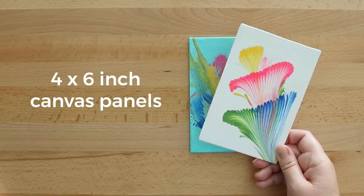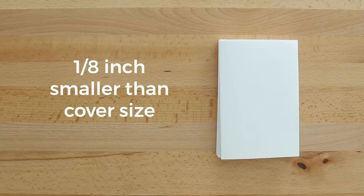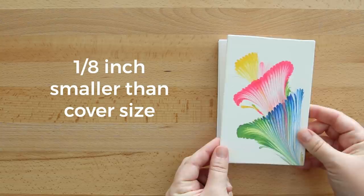For the pages, I made eight signatures of paper. Signatures are just four folded sheets stacked together. I trimmed all signatures to be an eighth of an inch smaller than the canvas panel. The page size is up to your preference, but I think this size fit better since the canvas wasn't even on all sides.